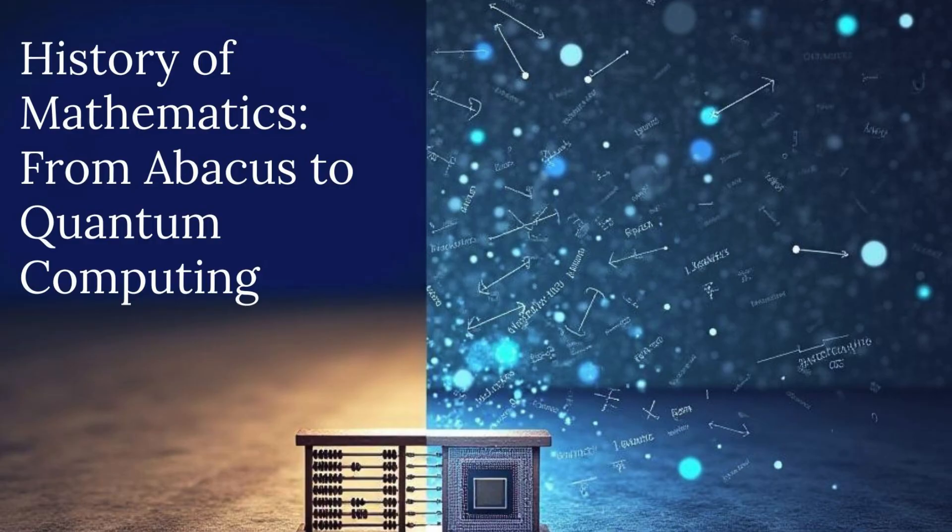As all this theoretical math is happening, something else is brewing - the idea of actually automating calculation. Charles Babbage in the 1830s in England designed these incredible machines: the difference engine, then the analytical engine. Mechanical computers powered by steam, conceptually. The analytical engine even had features like conditional branching, loops, memory - things we recognize in modern computers. And Ada Lovelace worked with him. She's often called the first programmer. She wrote what's considered the first algorithm intended to be processed by a machine, specifically for Babbage's analytical engine, calculating Bernoulli numbers. The machines were never fully built in their lifetime - too complex for the engineering of the time - but the ideas were incredibly influential.